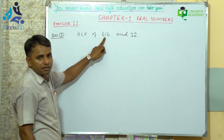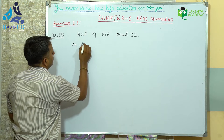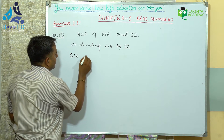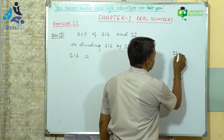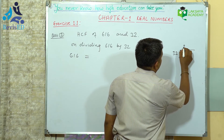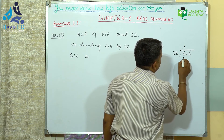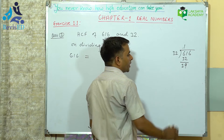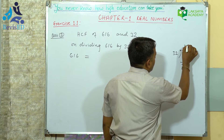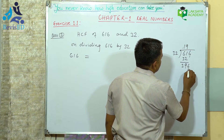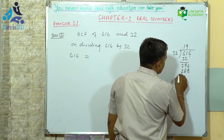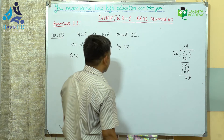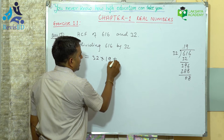Here 616 is greater than 32. So on dividing 616 by 32: 32 goes 19 times, giving 288, and the remainder is 8. So 616 equals 32 into 19 plus 8. The remainder is 8, not 0.